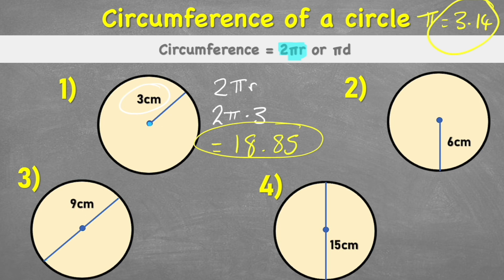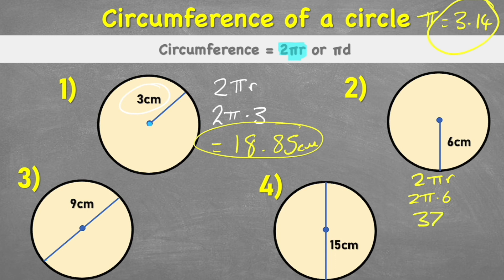The circumference for the first circle is 18.85 centimeters — don't forget your units. For example two, we're again given the radius, so using 2πr with r equal to six centimeters: two times pi times six gives an answer of 37.7 centimeters.